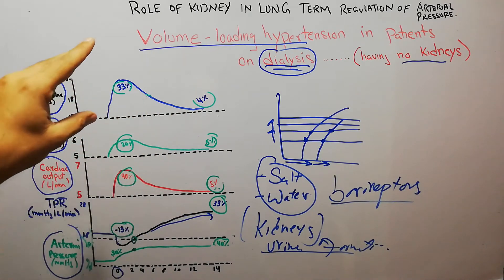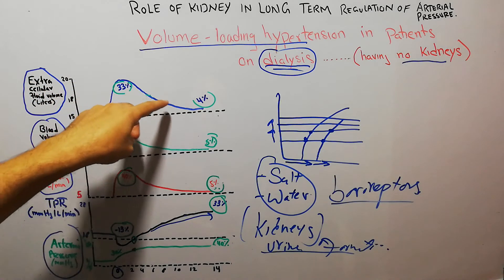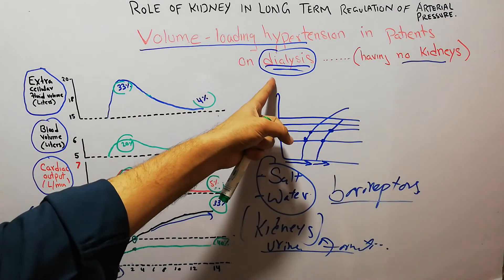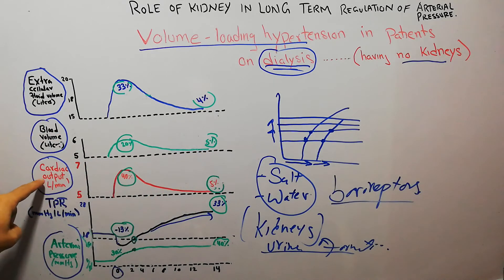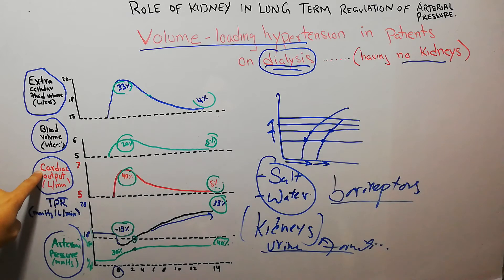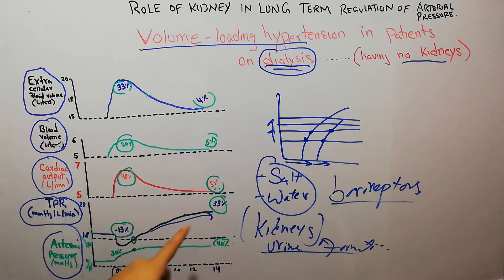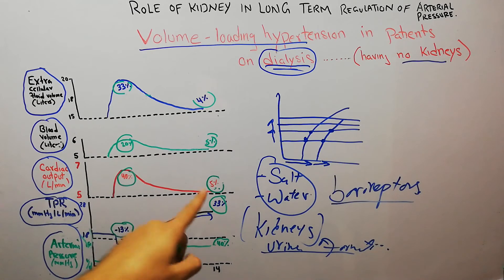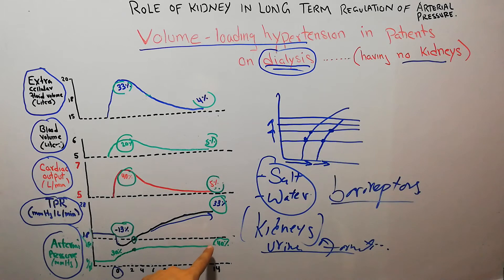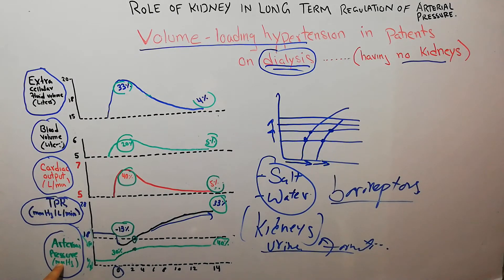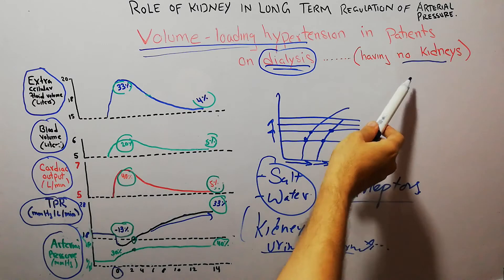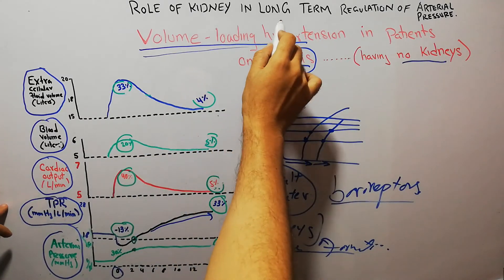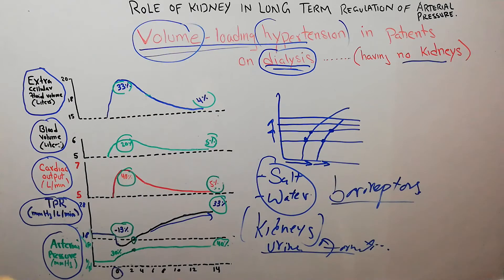When extracellular fluid volume decreases with the help of increased dialysis — since there are no kidneys — blood volume also decreases, which reduces cardiac output. However, the peripheral resistance will remain elevated. This persistently elevated total peripheral resistance then becomes the cause of sustained arterial hypertension. Volume loading hypertension is fundamentally due to excess fluid volume.